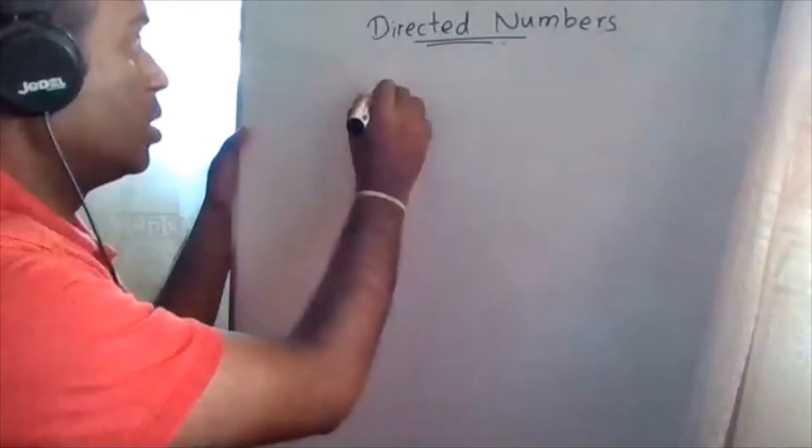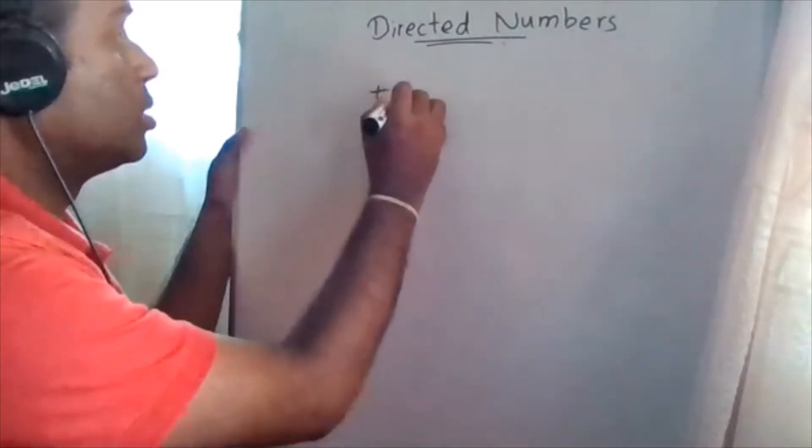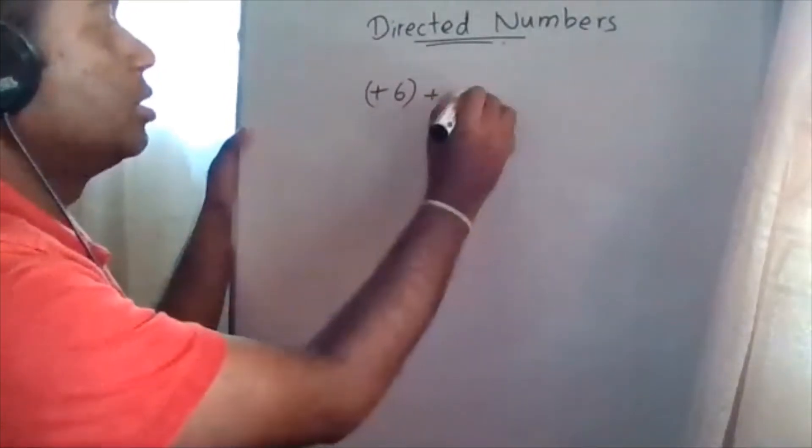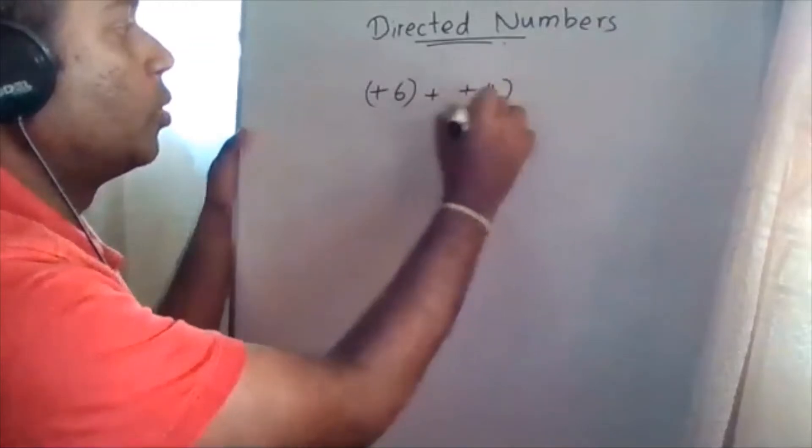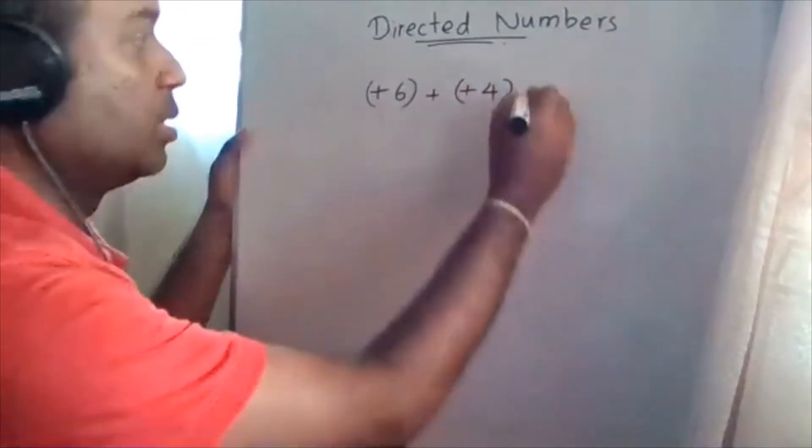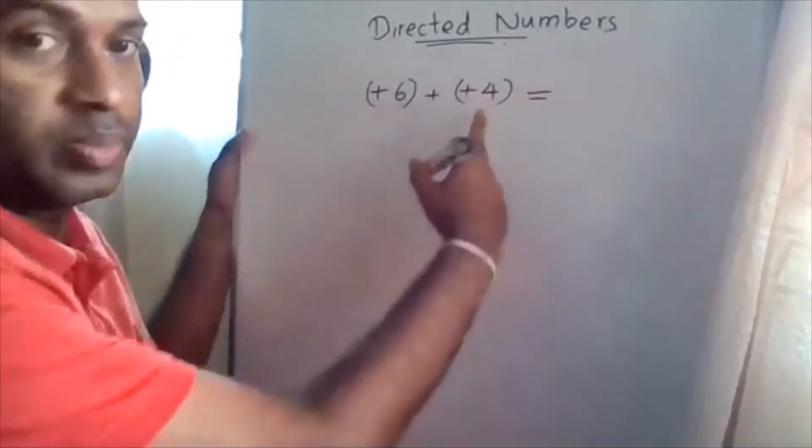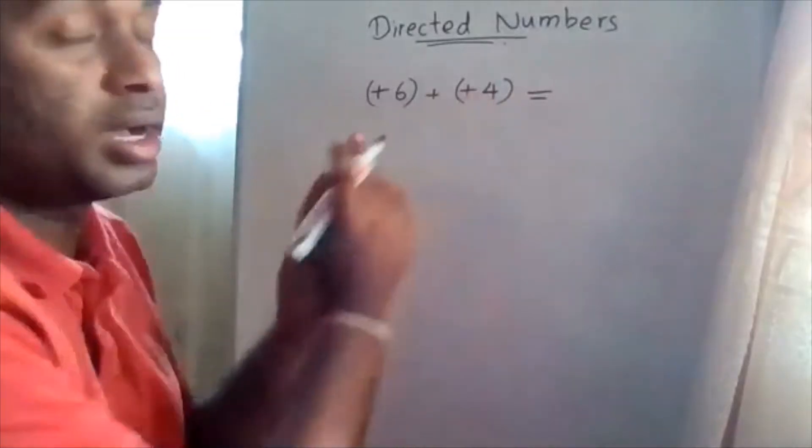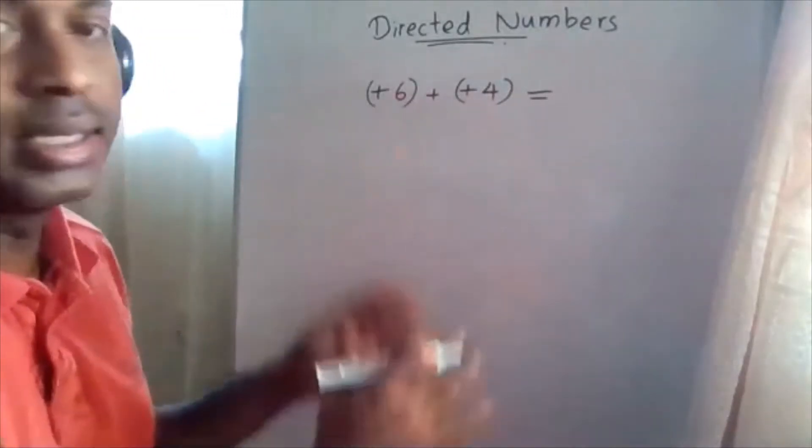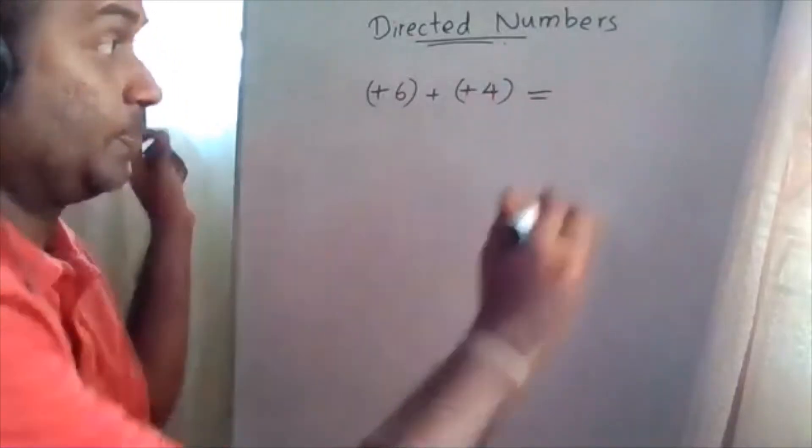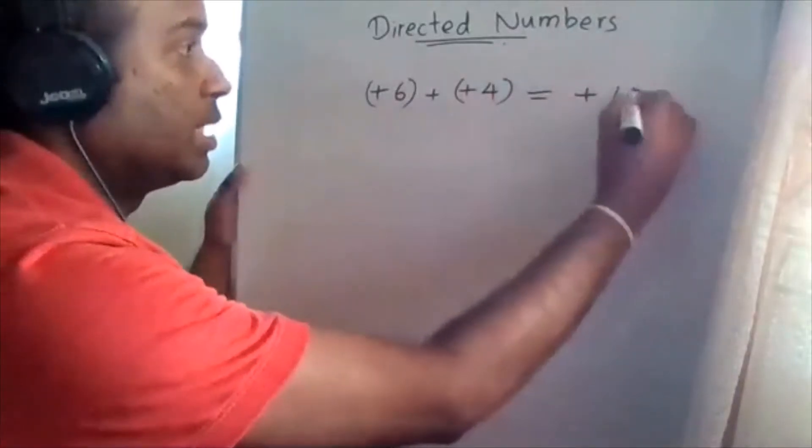Simplifying Directed Numbers: positive 6 addition positive 4. What is the answer? Here positive 6 addition positive 4. Both are same signs, therefore you add them, then it is positive 10.